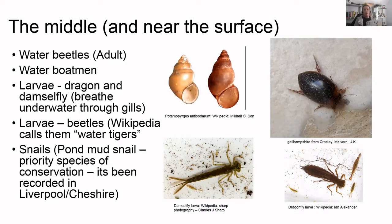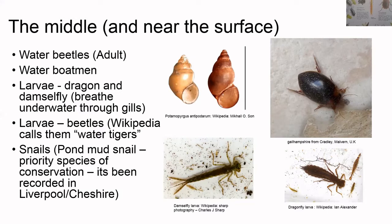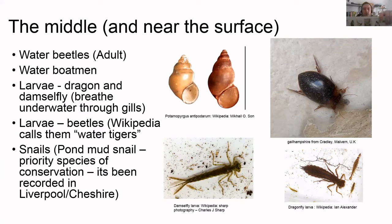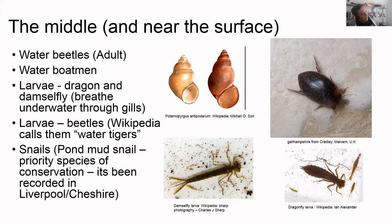Many aquatic beetle larvae look similar to terrestrial larvae - that maggot or worm-like form. The diving beetle larva is probably one of the easier ones to identify: it's got a huge head with big mandibles. You might find these in the sediment as well. I've also included the pond mud snail - as its name suggests it's found in very particular muddy habitats, and could be in the embankment or sediment.